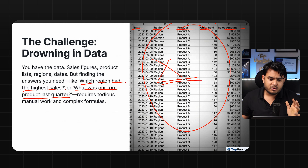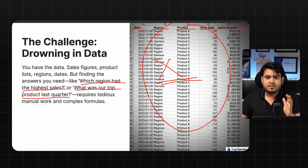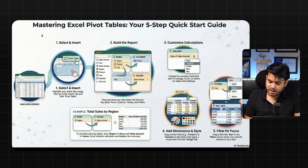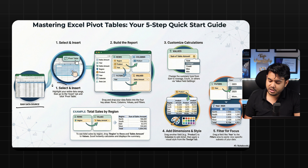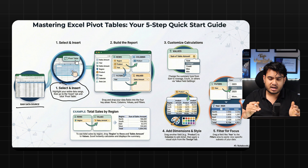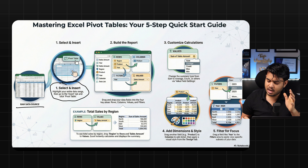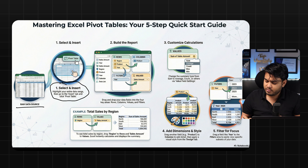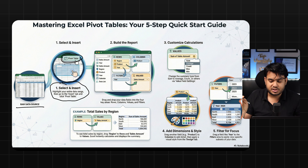Let me explain what a pivot table is with the help of infographics. You have raw data, and the first thing you need to do is select that raw data. Whatever data table or sheet you have, you need to select it. We'll see this practically, but right now I'm telling you conceptually. First you need to select and insert a pivot table — you will find this option in Google Sheets as well as Excel.